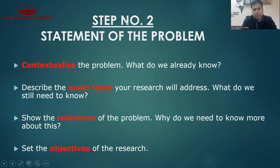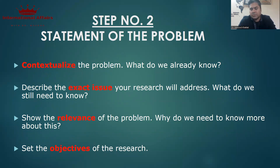The second step of proposal writing is the Statement of the Problem — this is the most important thing in your research proposal. Number one: you have to create the context of the problem, what do we already know. For example, if you are working on the post-2021 situation in Afghanistan, you give the context that the war against terror played havoc with the security of regional and global powers.